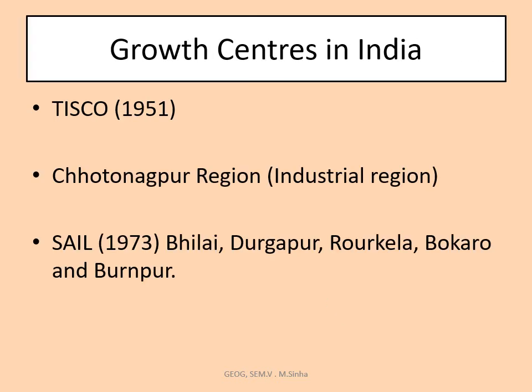Taking examples of Indian growth centers: after independence in 1951, TISCO — the Tata Iron and Steel Company in Jamshedpur — and the Chotanagpur industrial complex began their journey. The Chotanagpur plateau and its pockets were enlightened by economic development through TISCO. Another example is SAIL, established in 1973, with plants at Bhilai, Durgapur, Rourkela, Bokaro, and Burnpur — five iron and steel industries.